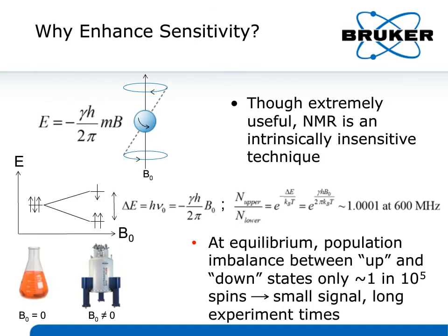So to begin to get into the rationale for DNP, many of you who are familiar with NMR know that NMR is an intrinsically rather insensitive technique. If we just look at the population imbalance between the two nuclear spin states at Boltzmann equilibrium, which is otherwise known as the polarization or magnetization of the sample, we see that it's very small — about 0.01%, or only one in 10 to the fifth spins more in the lower energy state than in the higher energy state.